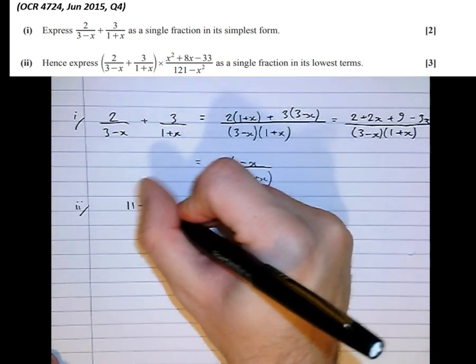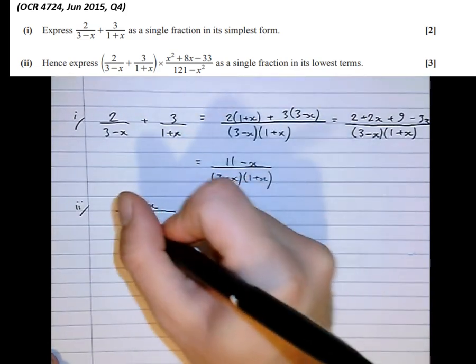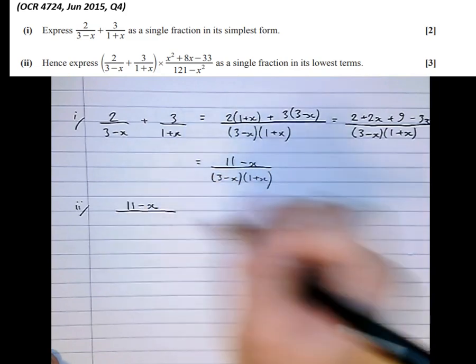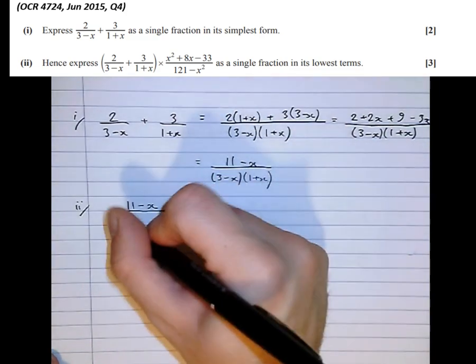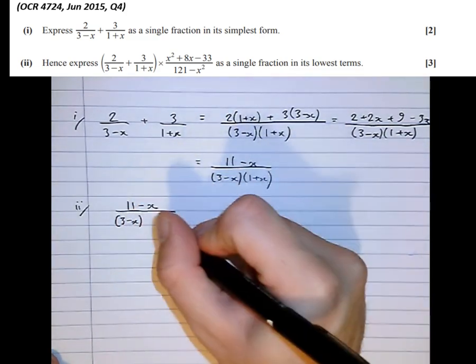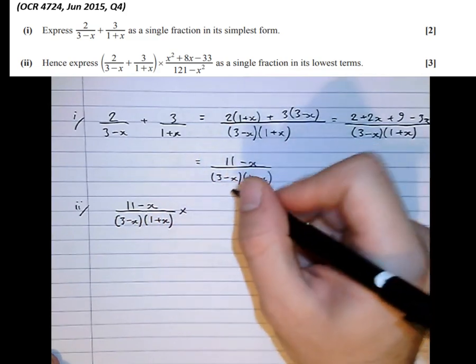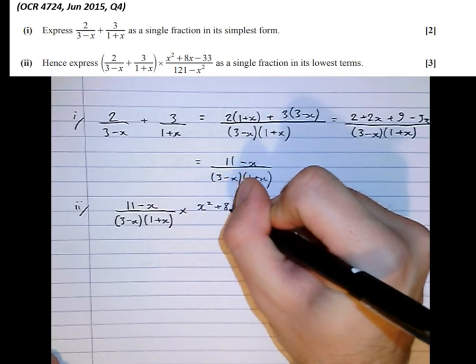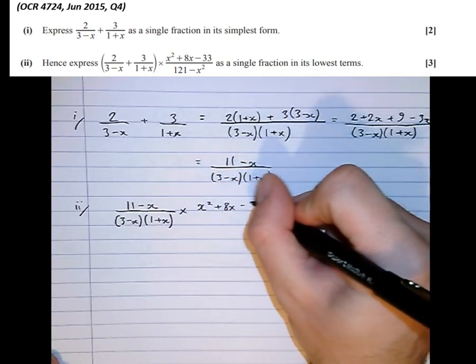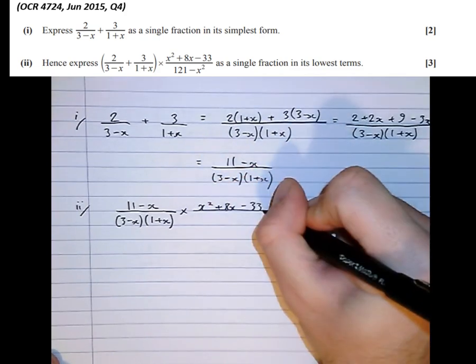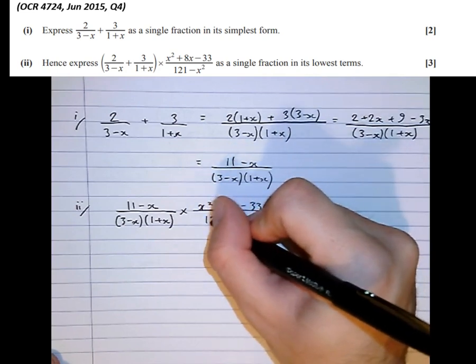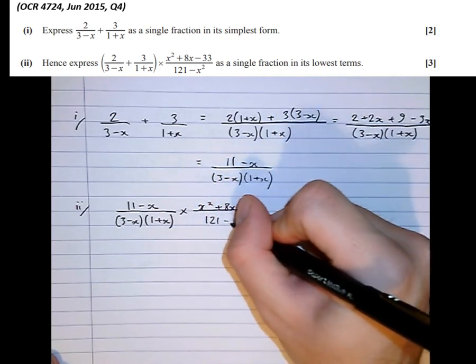So actually, we can rewrite that as 11 minus x over 3 minus x, 1 plus x. And that's multiplied by x squared plus 8x minus 33 over 121 minus x squared.